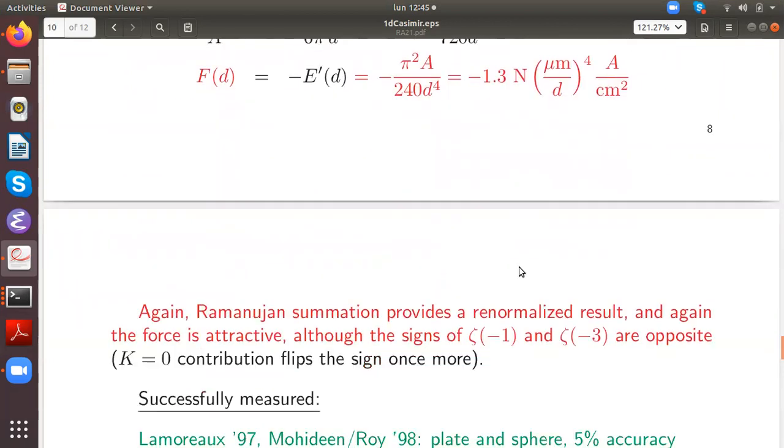So again, Ramanujan summation provides a renormalized result, and again the force is attractive, although the signs of zeta of minus one and zeta of minus three are opposite. But notice that here we have the contribution of k equals zero, so this flips the sign once more.